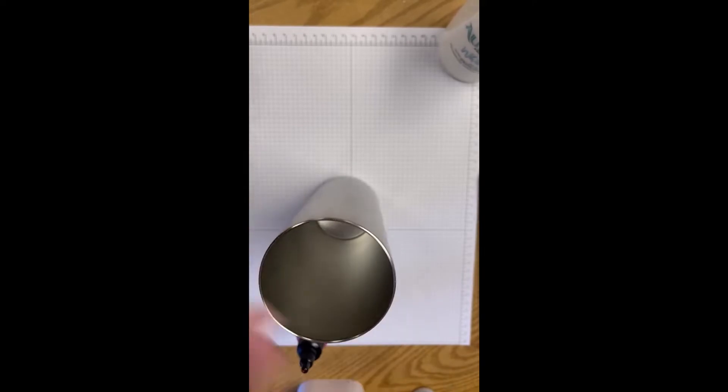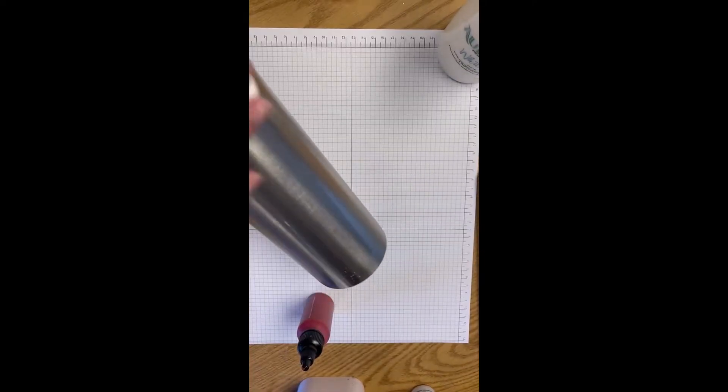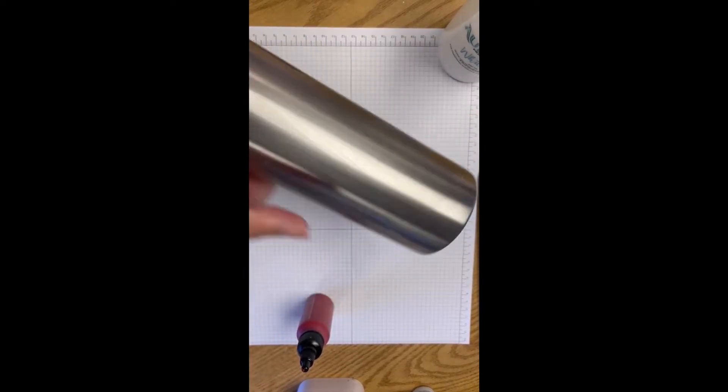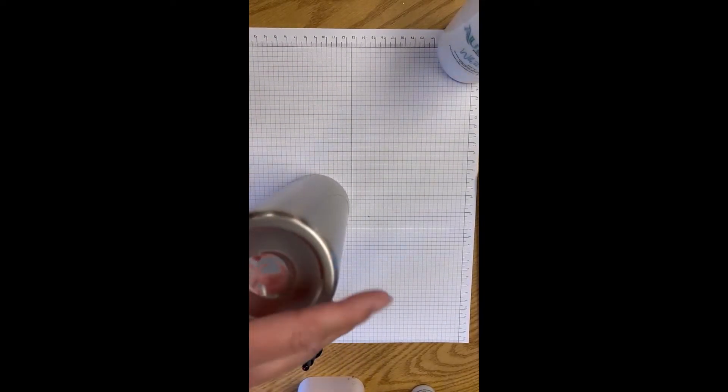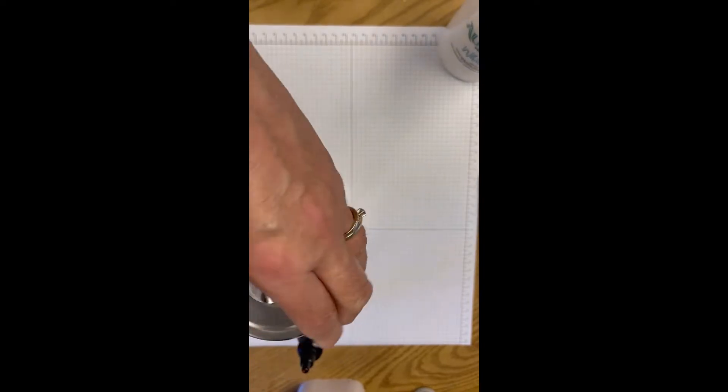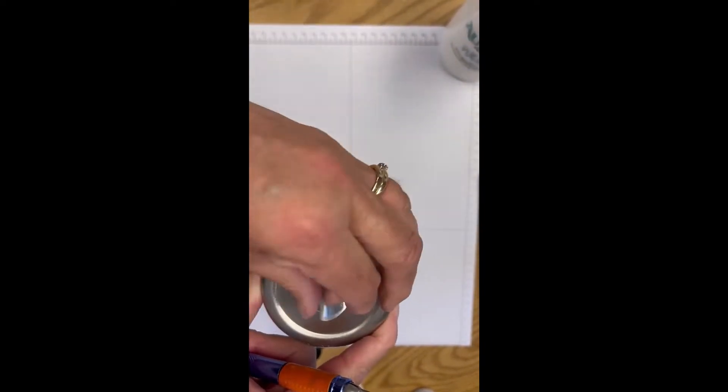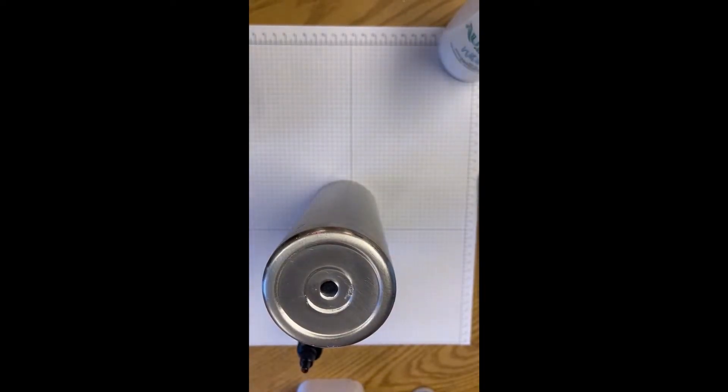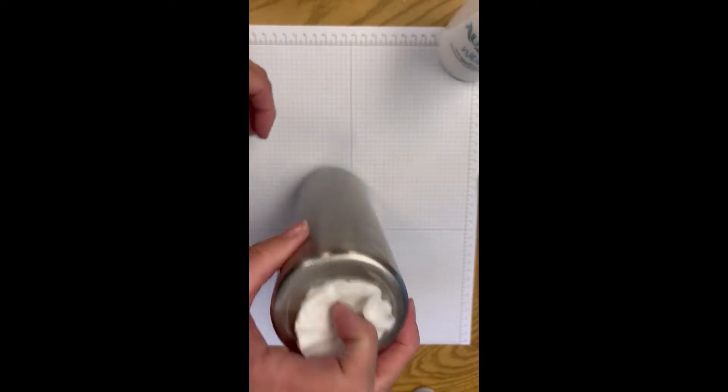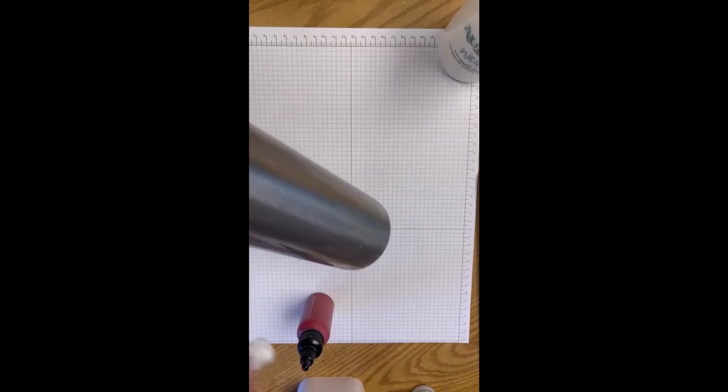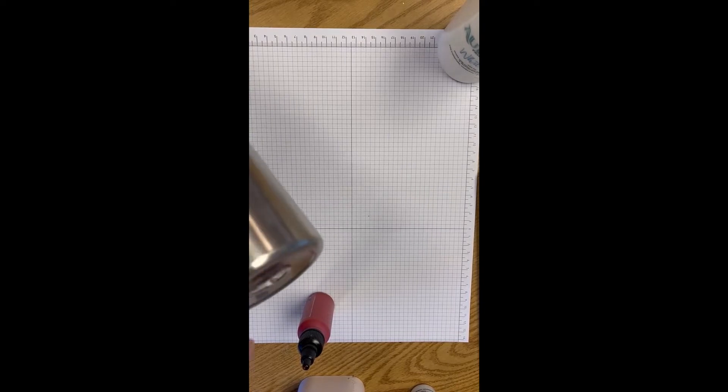So what I'm going to do is, first of all, I'm going to clean off my tumbler. I want to make sure that there's no fingerprints, oily residue, or dust that might trap any of the paint or stop the paint. I'm going to pull off these little pieces at the bottom as well.